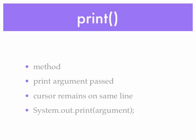The first method is print. It prints the argument passed, and then the cursor remains on the same line. A line that uses the print method would be system.out.print, then pass your argument within parentheses, and of course a semicolon at the end. This is an executable line of code.